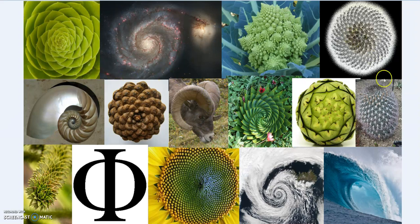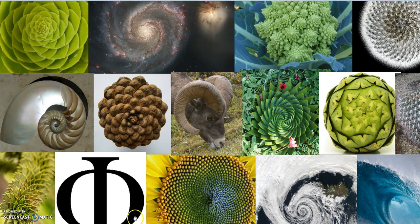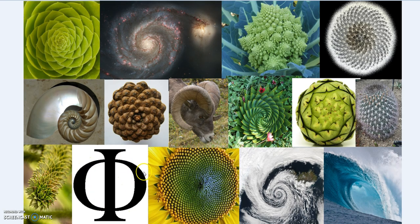Phi — the golden number, the divine proportion, however you want to call it — is truly one of the most important cosmic numbers, and I mean 'cosmic' in the literal sense: not just on Earth, but throughout the universe, from the macro to the micro. It's the way nature wants things to be — the growth rate. Whether you use Fibonacci numbers, Lucas numbers, or any similar series, you always arrive at the golden number: phi, 1.6180339887, on to infinity.